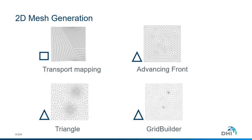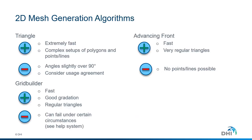But what are the options that we have? We have basically four mesh generators: Transport Mapping, Advancing Front, Triangle, and Grid Build. These mesh generators consist of multiple algorithms with advantages and disadvantages, and this will depend on the specific situation where you have.